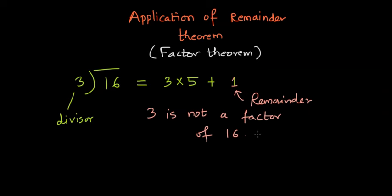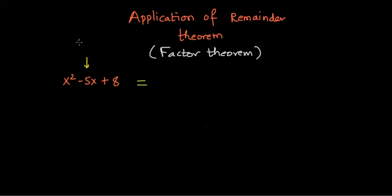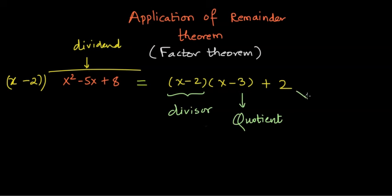This is about numbers, and the same thing can be done with polynomials. What if we had polynomials instead of 16 and 3? The same logic applies — there will be a divisor, a quotient, and a remainder. So if I had the polynomial x² - 5x + 8 as the dividend and divided it by (x - 2), I would find that it can be written as (x - 2)(x - 3) + 2, where (x - 2) is the divisor, (x - 3) is the quotient, and 2 is the remainder.